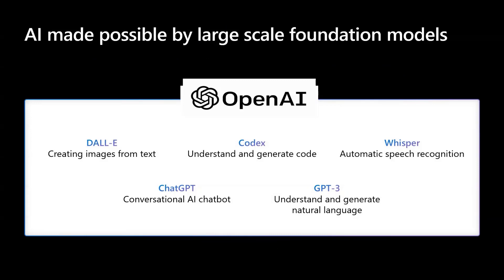OpenAI is not just ChatGPT, but a collection of different services which users can take advantage of today, from creating images from text to speech recognition, for example.